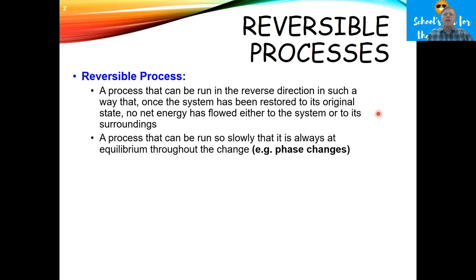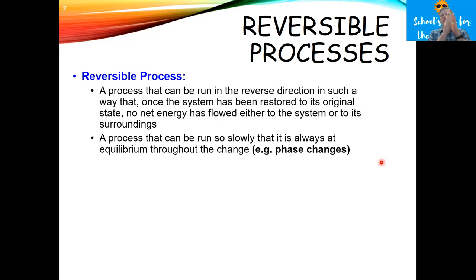Another condition of a reversible process is that it can be run so slowly that it is always at equilibrium throughout the change. A great example is a phase change. If you have a block of ice and you add half the heat needed to melt it, you've turned half the ice into liquid water, and at that point you have an equilibrium between ice and water. If you add heat really slowly, at any point there's an equilibrium between ice and water.